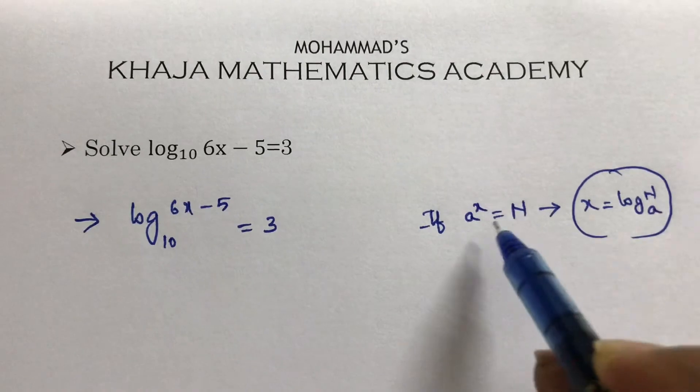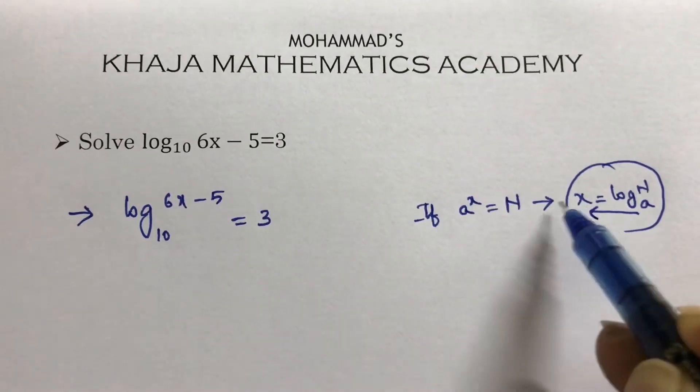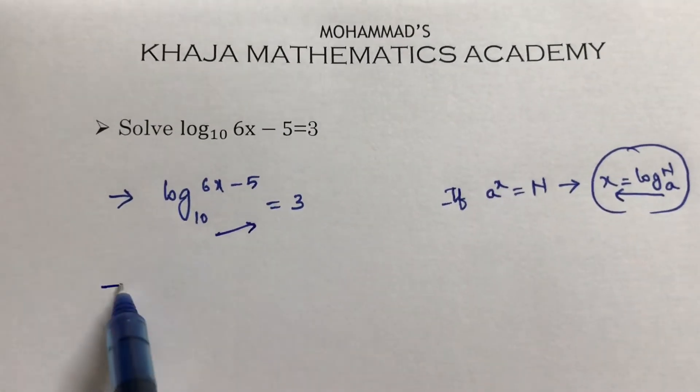To convert into power form, aˣ = n. So here, I'll change this to exponential form.